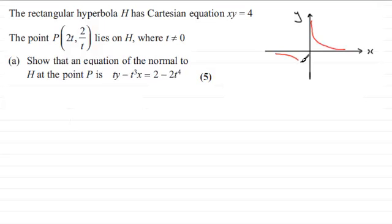Okay, we should be familiar with this. Asymptotes then the y-axis and the x-axis. And our point P can be placed anywhere on the curve. I'm just going to place it at this point here. That's the point P with coordinates 2t and 2 over t.